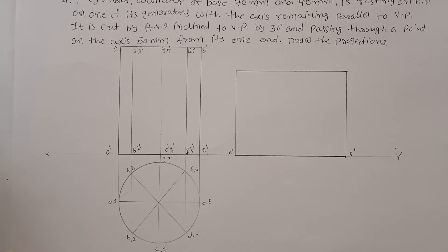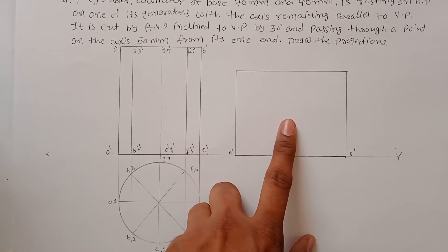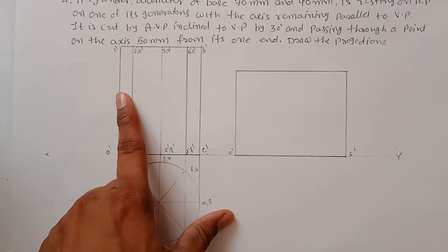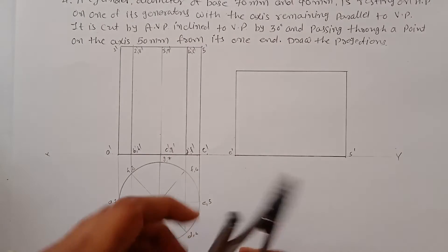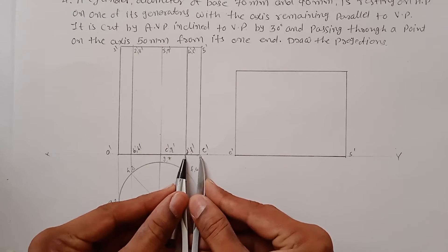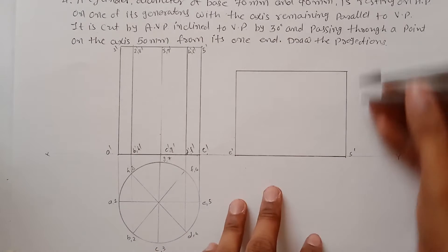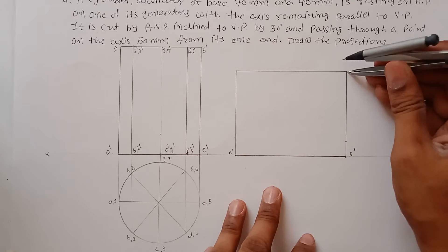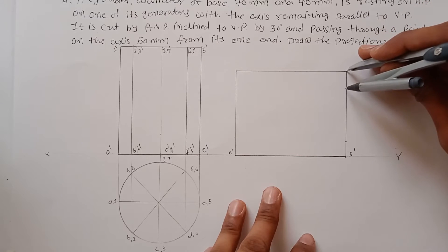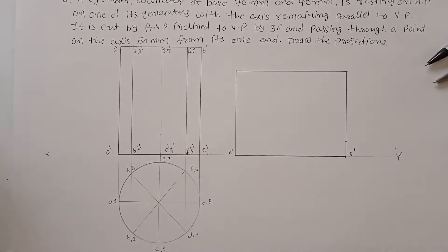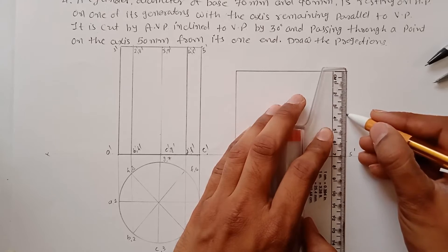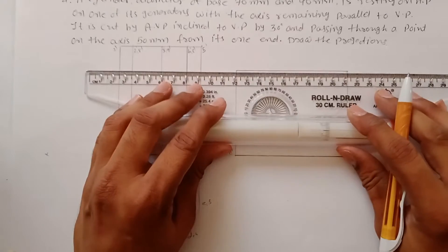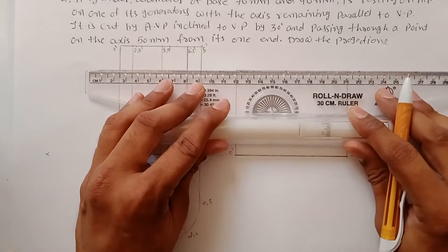Now we need to draw this front view. You could draw the shape directly, but the question is how to get the three internal generator lines. To find those points, we construct the initial front view, then measure the distances and transfer them to both sides. One key point is at the center, which is 35mm.